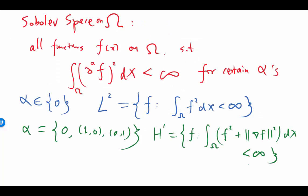So now I have a space that enforces not only the function, the square of the function doesn't integrate to infinity. I also enforce that the square of the derivative does not integrate to infinity. And you can also convince yourself this is a proper function space.